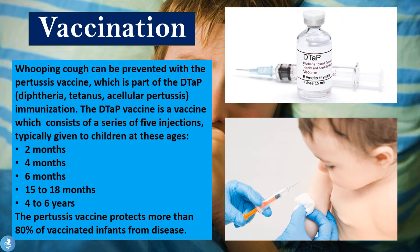Now let's talk about vaccination for pertussis. The whooping cough infection can be prevented with the pertussis vaccine, which is part of the DTaP vaccine — standing for diphtheria, tetanus, and acellular pertussis. The DTaP vaccine consists of a series of five injections typically given to children at two months, four months, six months, 15 to 18 months, and then again between four to six years. This vaccine protects more than 80% of vaccinated infants from developing the disease, which is why it comes highly recommended.